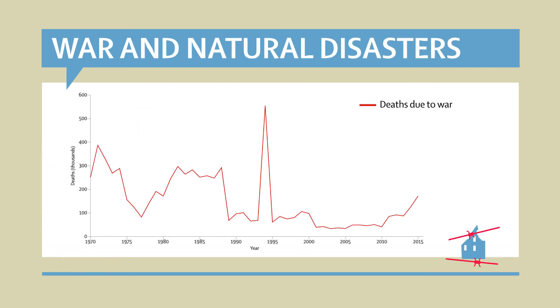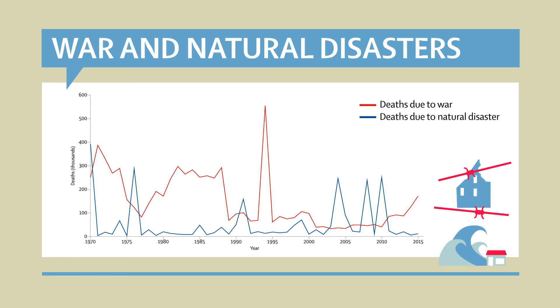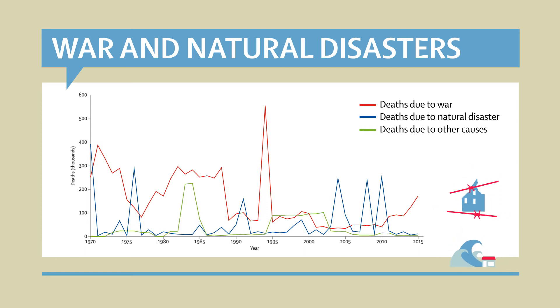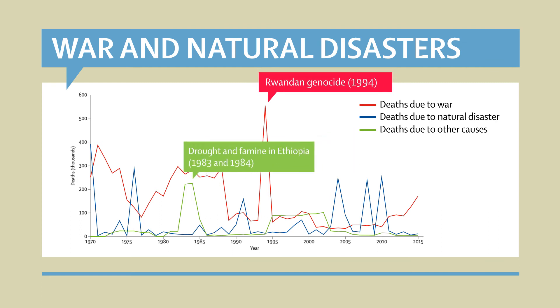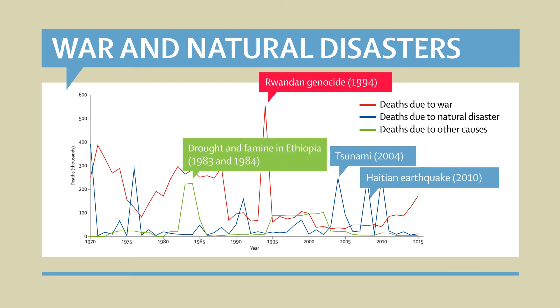While there are disease-related deaths we can predict, there are also deaths due to war and natural disaster that we cannot. Mortality shocks show spikes in deaths due to genocide, drought, and earthquakes.